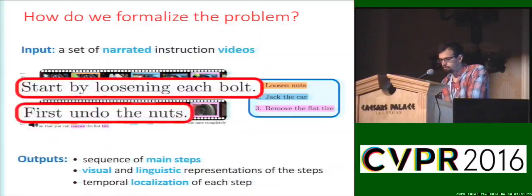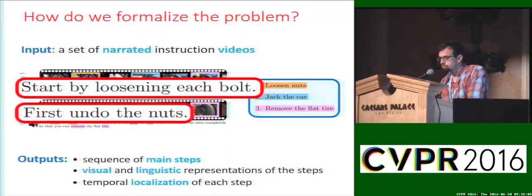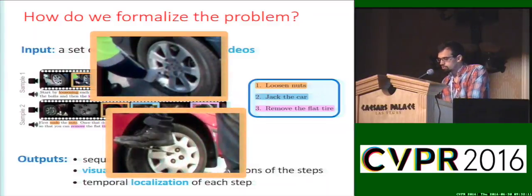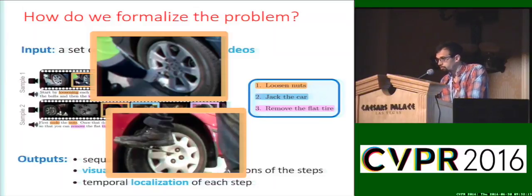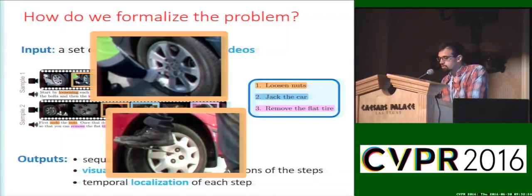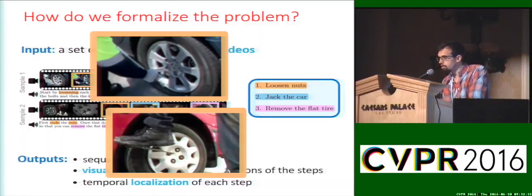This problem is challenging. First, there are variations in the way people talk about actions. In this example, one may say 'start by loosening the bolt,' whereas another could say 'first, undo the nuts' to express the same action. This is even worse in the visual domain, because of several factors of variation such as viewpoint, illumination, or the way people perform each step. In this example, the first person uses their hand, whereas the other prefers using their foot to get more strength. Moreover, we want to produce this output directly from data, without any manual annotation.